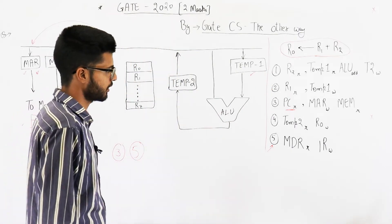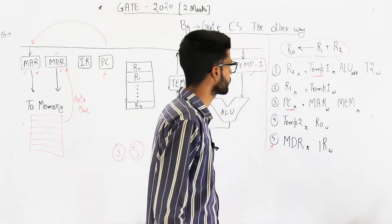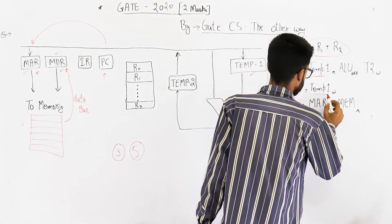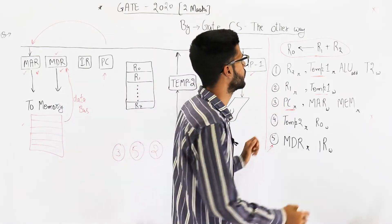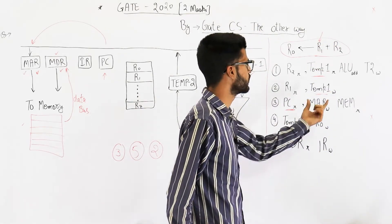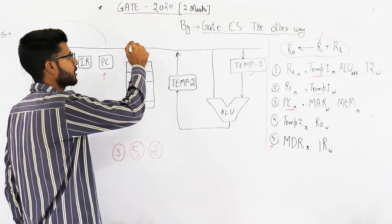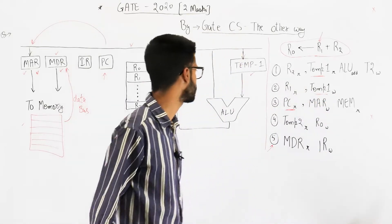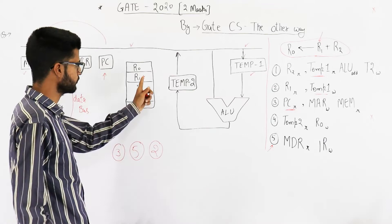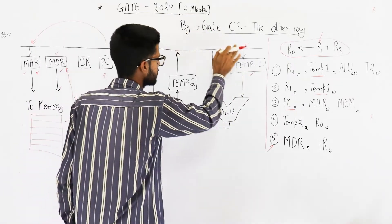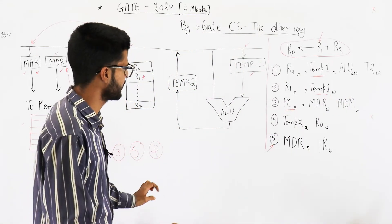For adding, we need one operand in temp1. Looking at the remaining steps, we can see temp1 appears in one of them — R1's value is being moved into temp1. R1 is given a read signal, placing its value onto the bus, and temp1 is given a write signal, so temp1 copies whatever value is on the bus. Effectively, data travels from R1 to temp1, giving us the first operand.